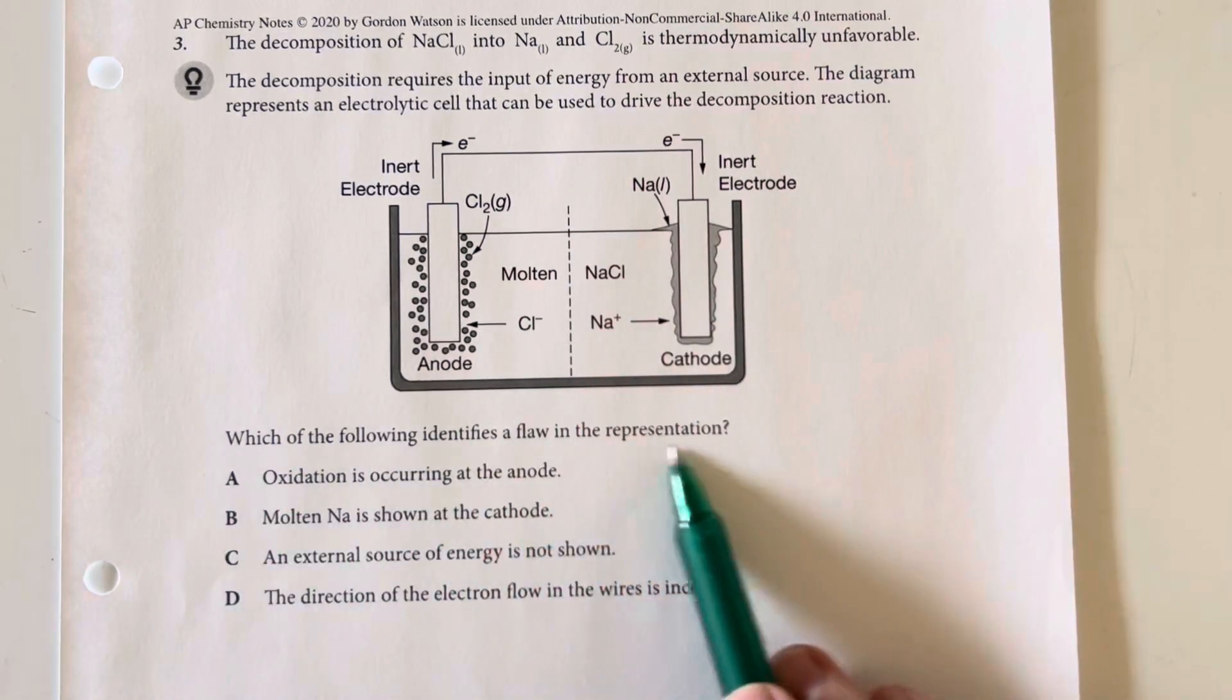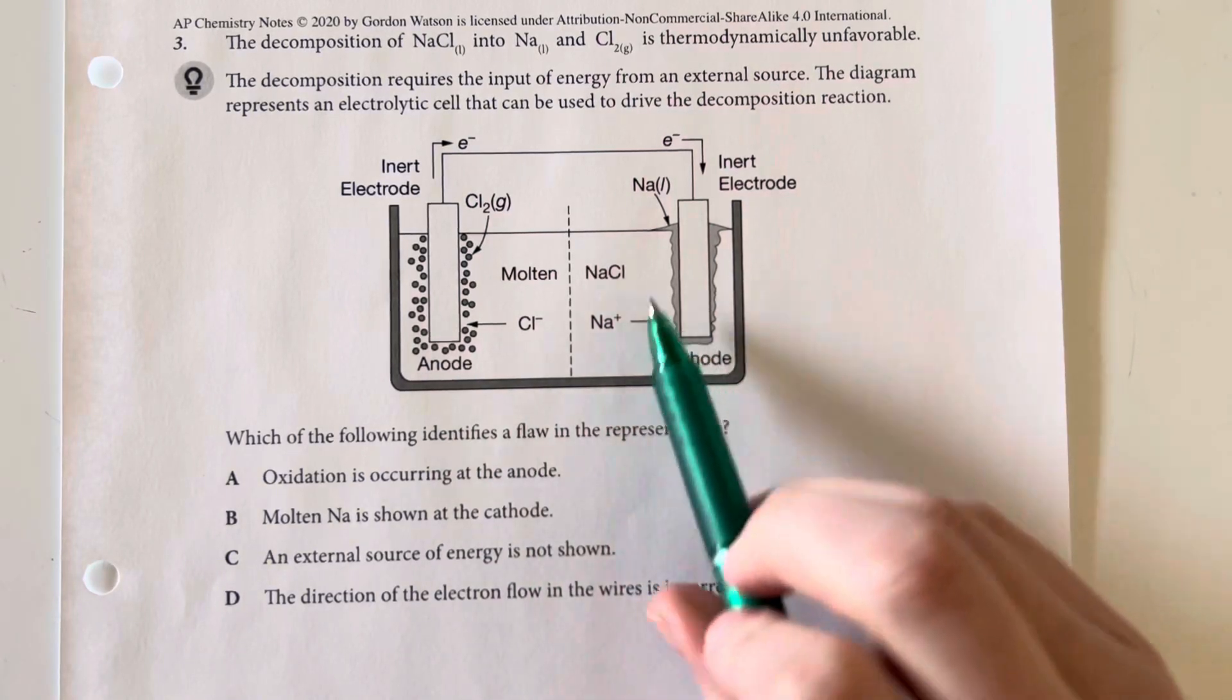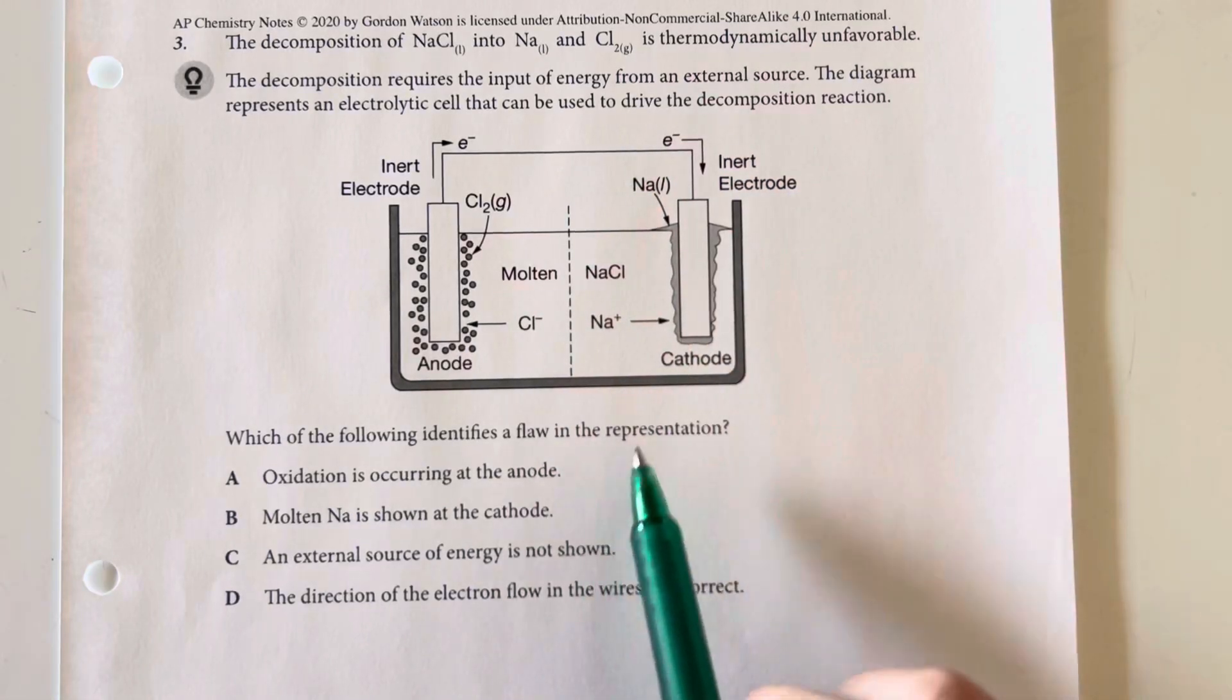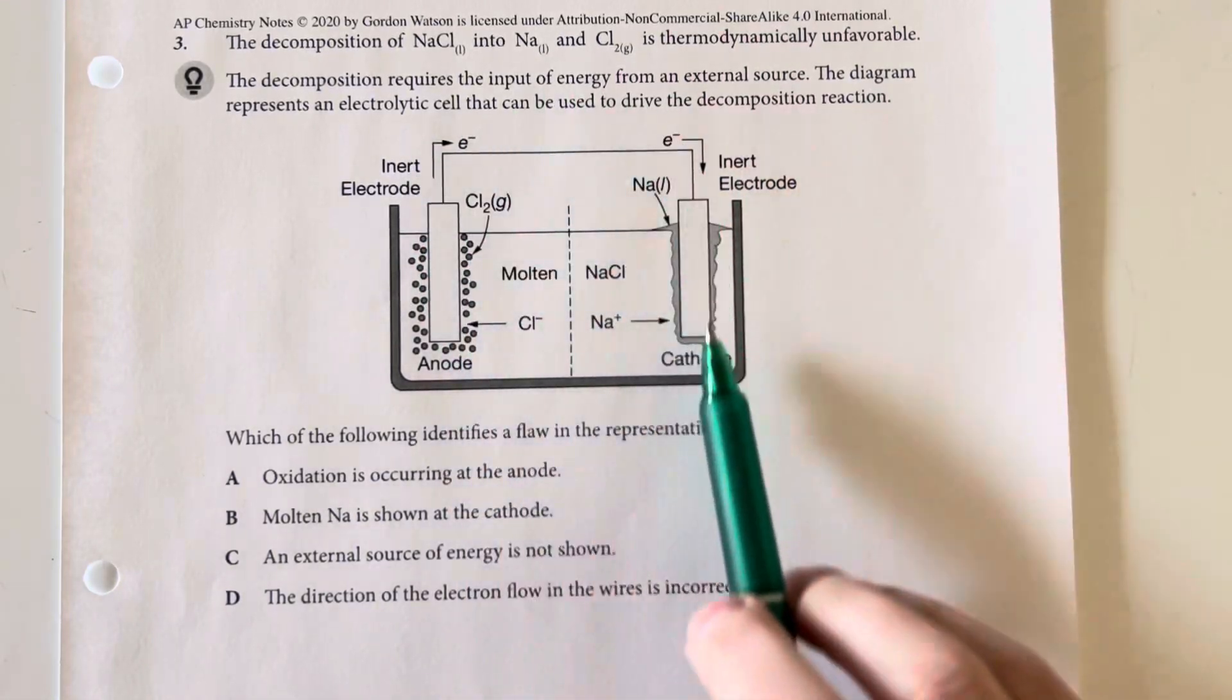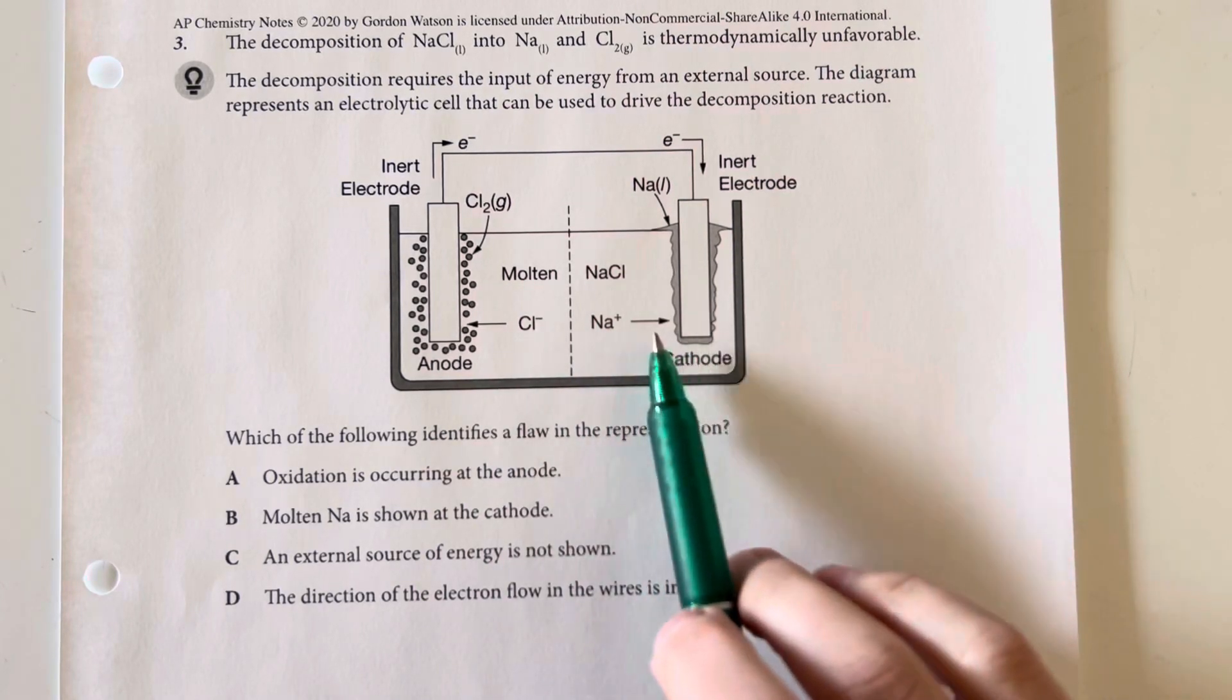So which of the following is the flaw in the representation? So, we have our cathode, where we are going ahead and adding in those electrons to precipitate out the sodium, giving it back the electron needed so that it can go ahead and gather around the cathode.